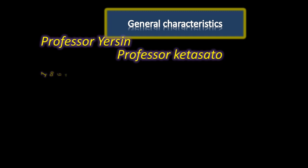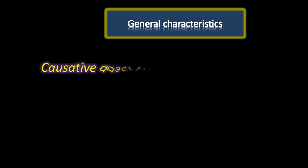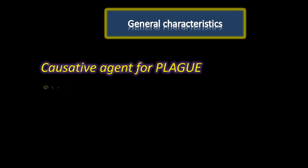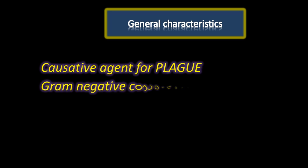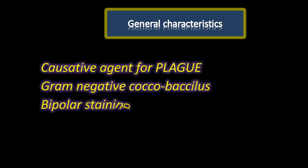Hence, we call this genus Yersinia. They are the causative agents of plague. They are gram-negative coccobacilli belonging to the family Enterobacteriaceae. They show the property of bipolar staining, which gives them a safety pin kind of appearance.